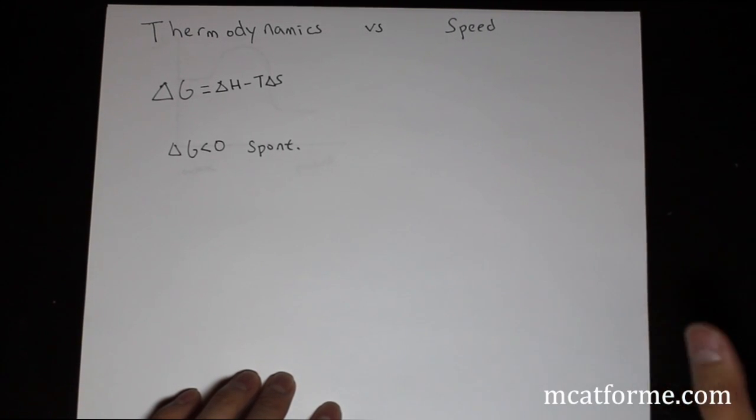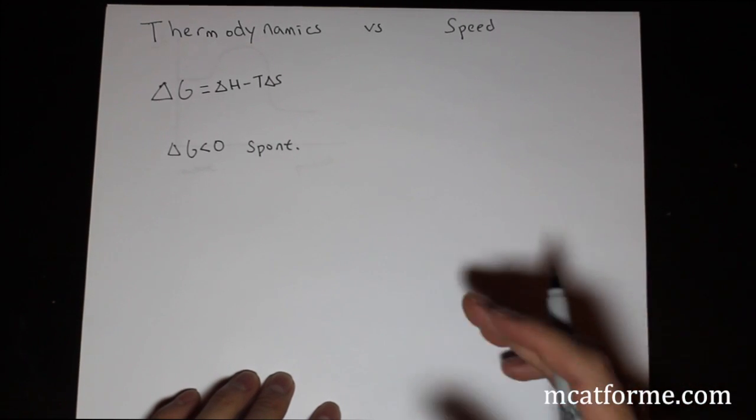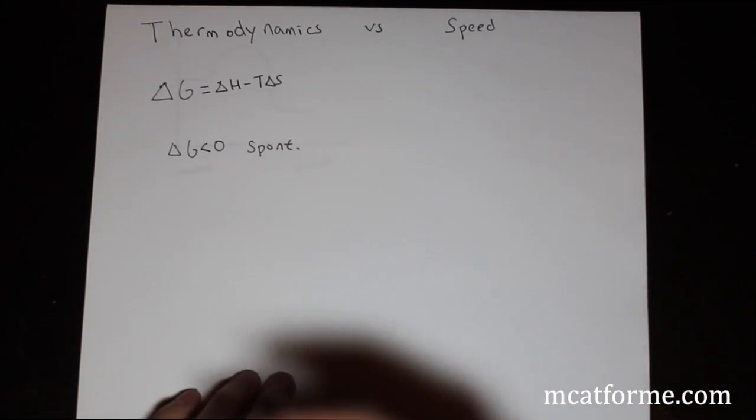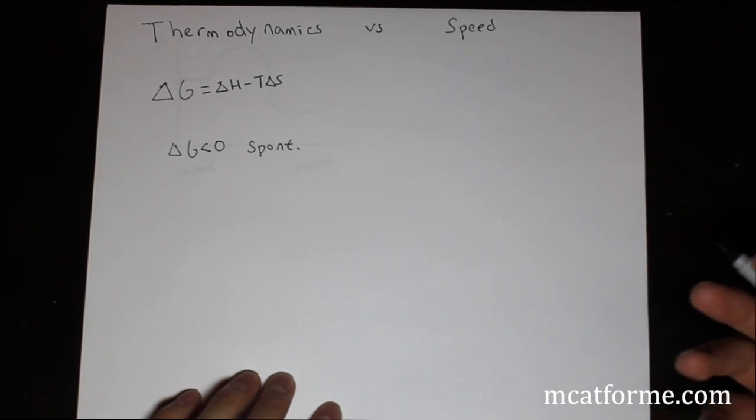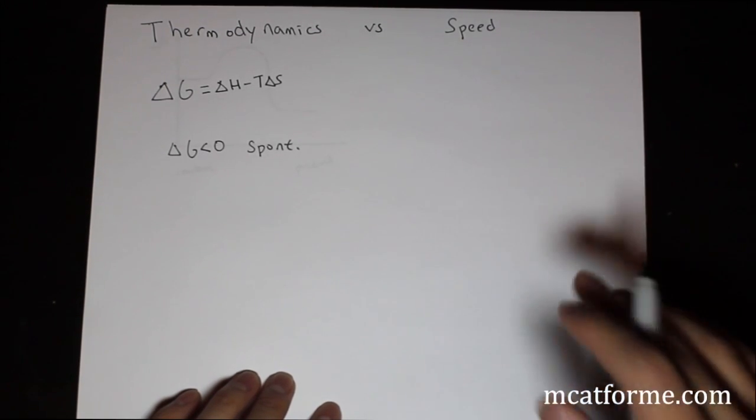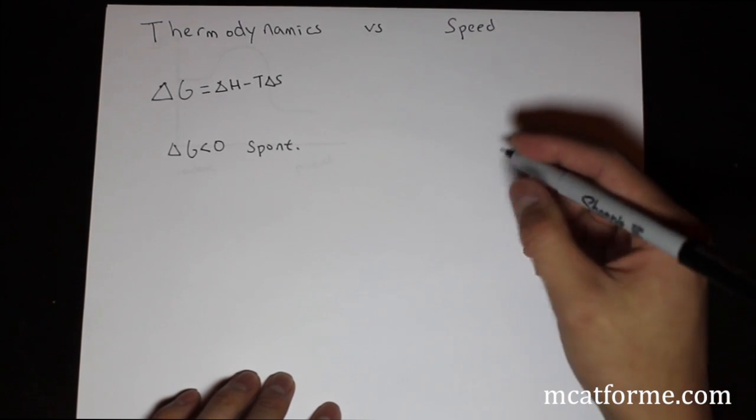So that just tells us that over a period of time, we know that if it's spontaneous that the reaction will occur eventually, but it may need a lot of energy to do so. So thermodynamically it's favorable, but that doesn't mean it's going to happen. So we need to know how fast is this going to happen and how likely will it happen. And that's what speed and kinetics is all about.